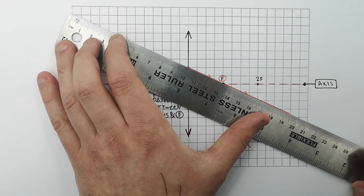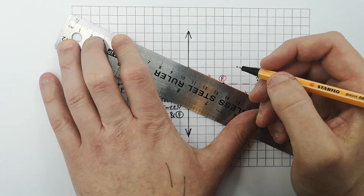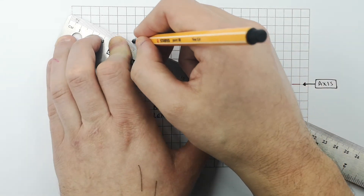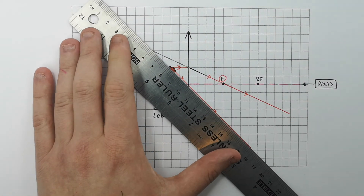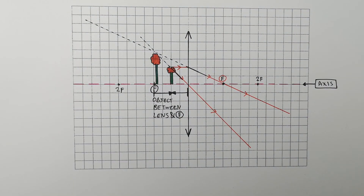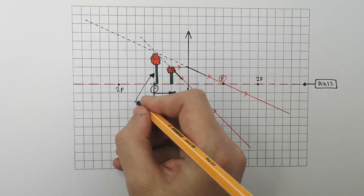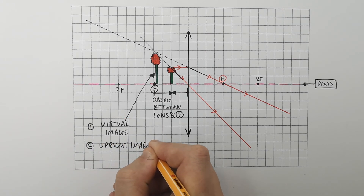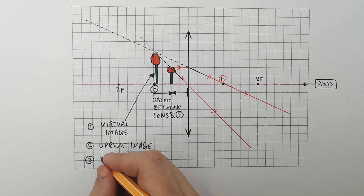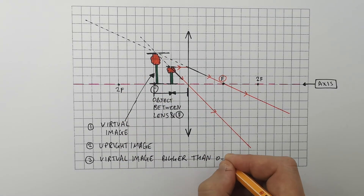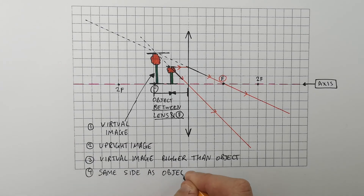Instead, an image will appear on the near side behind the object — this is a virtual image. You draw the virtual rays that go behind the object, and at this point the virtual rays meet. The image formed is behind the object on the near side of the convex lens. This virtual image is upright — it is not inverted like real images. The virtual image is bigger than the object, and it is on the same side as the object: the near side of the convex lens.